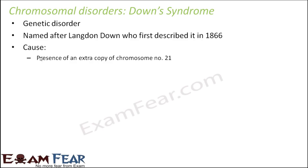What is the cause of this? The presence of an extra copy of chromosome number 21. In human beings, the total number of chromosomes should be 46. If you have an extra copy of any chromosome, the total count increases from 46 to 47. When that happens, you have extra genes, some extra proteins are being synthesized, and that is the cause of this disorder.